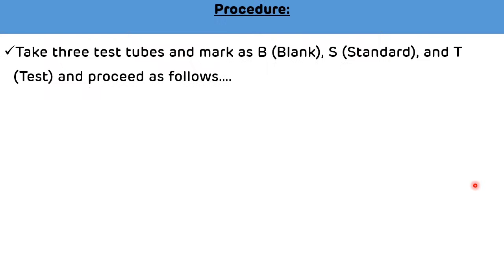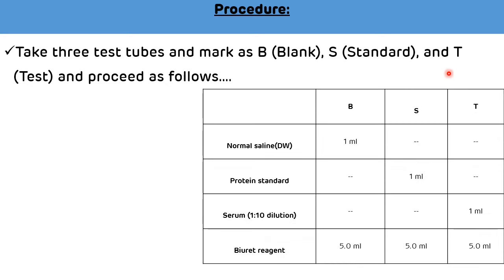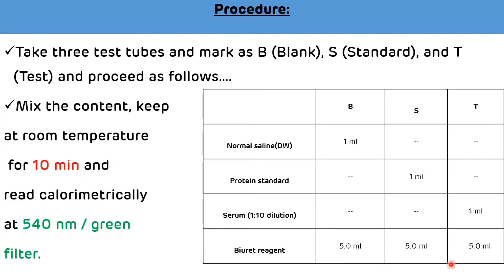Operational procedure: take three test tubes and label them as blank, standard, and test. In the blank test tube, add 1 ml of normal saline. In the standard test tube, add 1 ml of protein standard — concentration of protein standard is 5 g/dL. In the test tube, add 1 ml of diluted serum. Then in all three test tubes add 5 ml of biuret reagent. Mix and keep at room temperature for 10 minutes incubation.